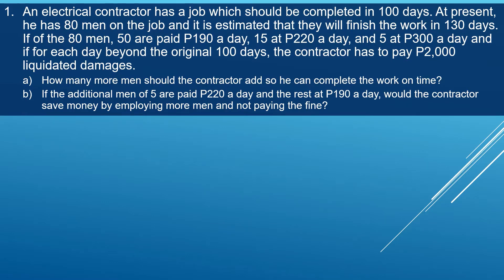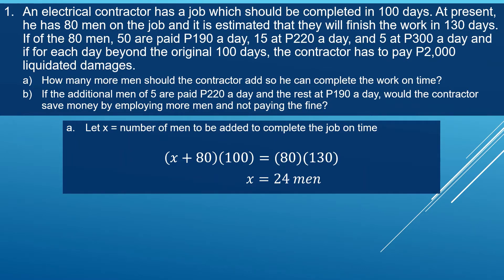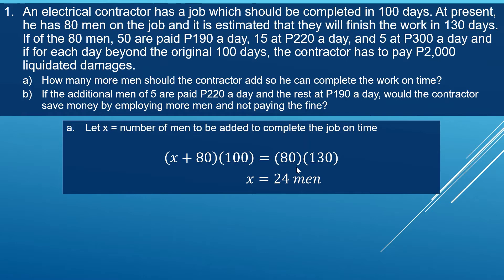To solve letter A, we let X be the number of men to be added to complete the job on time. We equate man-days: (X + 80) times 100 days equals 80 men times 130 days, since 130 days is the present estimation for 80 men to finish the job. Solving this, X is equal to 24 men. So 24 men must be added to the existing 80 men to finish the job within 100 days.